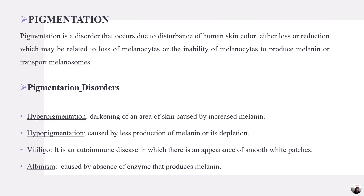The next problem is pigmentation. Pigmentation is a disorder that occurs due to disturbance of human skin color — either loss or reduction — which may be related to loss of melanocytes or the inability of melanocytes to produce melanin or transport melanosomes. Pigmentation disorders include hyperpigmentation, hypopigmentation, vitiligo, and albinism.